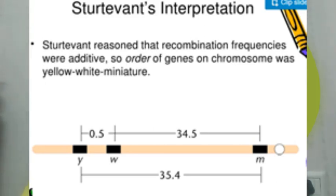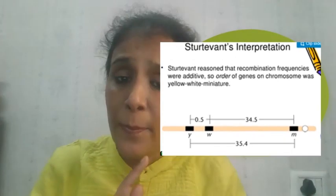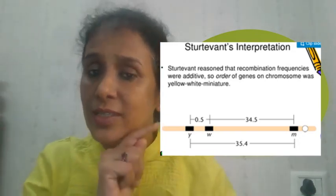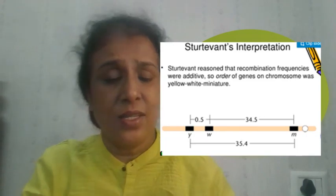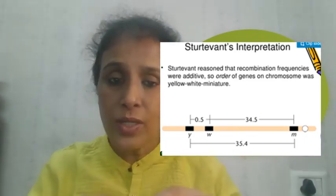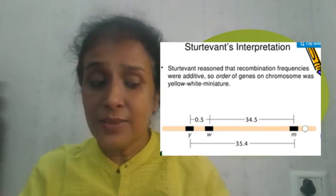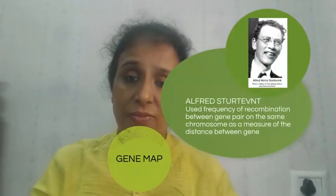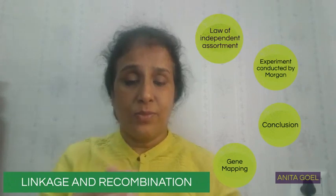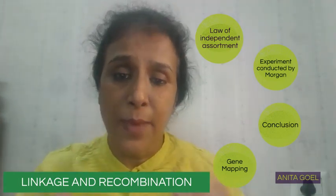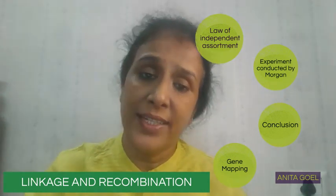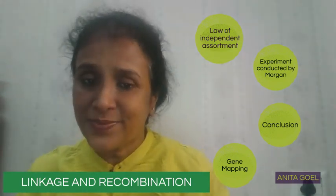These three genes are found on the same chromosome. Yellow and white show very little distance — only 0.5% recombinant, so the distance is 0.5 units. Yellow and miniature show 35.4% recombinant, so their distance is 35.4 units. White and miniature show 34.5% recombinant, so their distance is 34.5 units. So if more is the percentage of recombinant, the distance is more; if less is the recombinant frequency, they are close. In this way, we can make the gene map of all chromosomes of any organism. I hope this concept is clear to you now. Thank you.